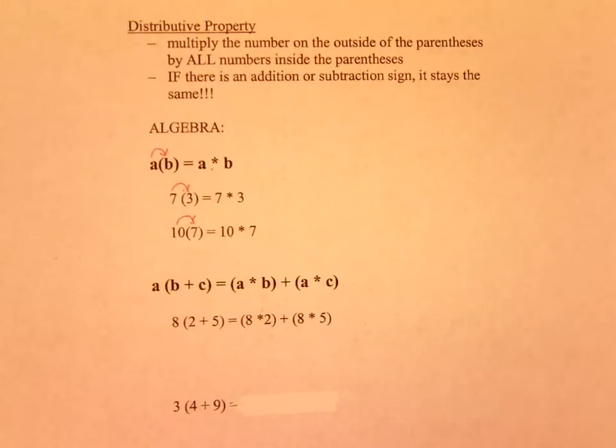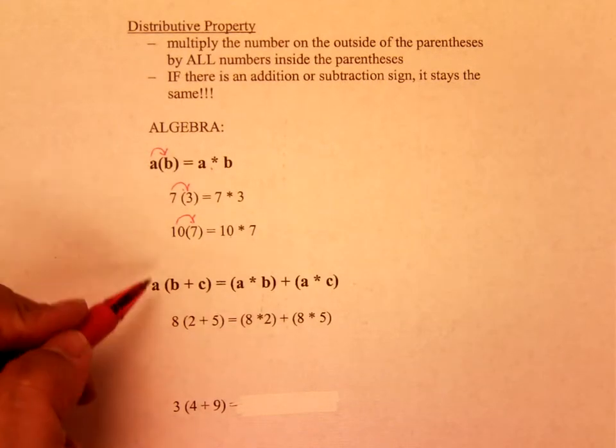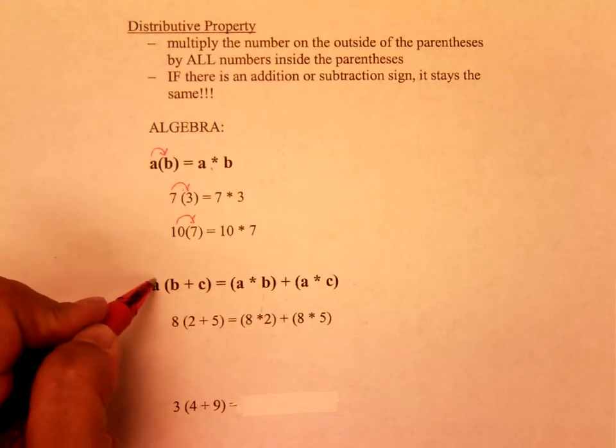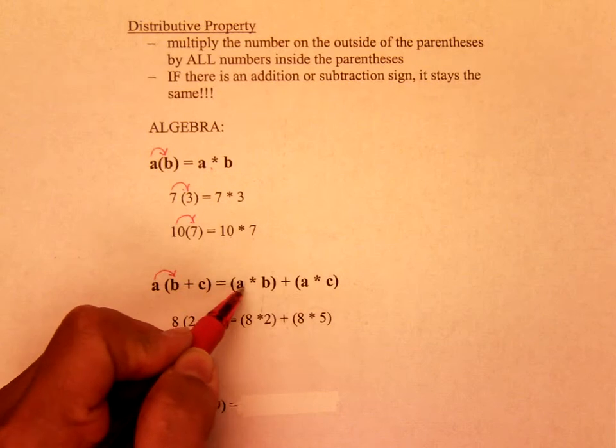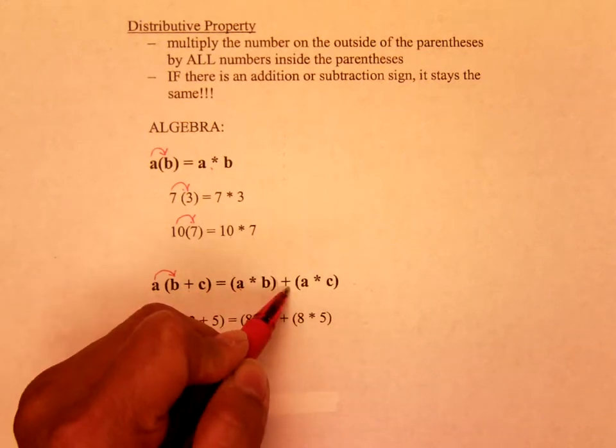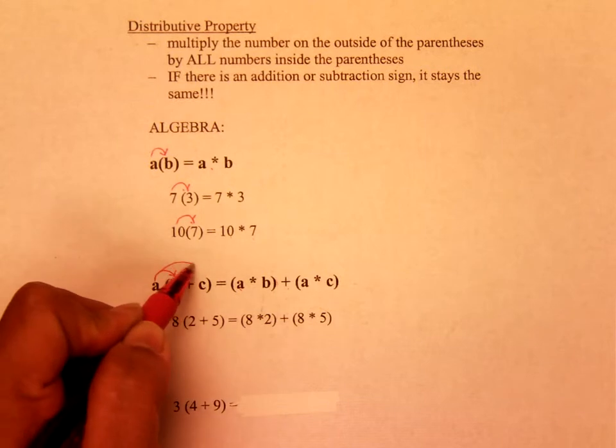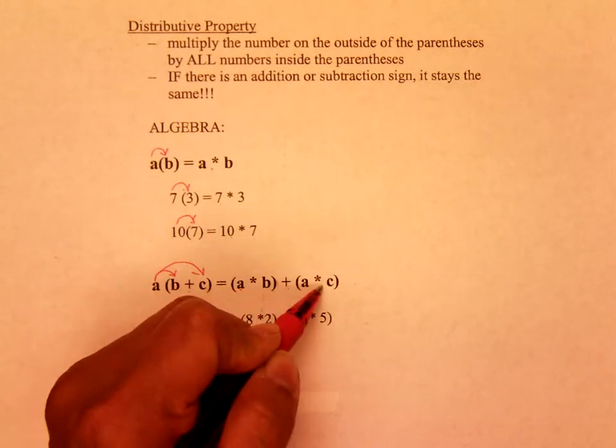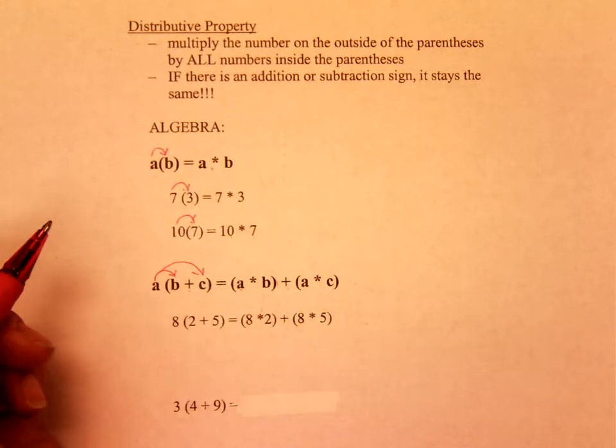Here is your Distributive Property. On the left-hand side, you have A times B, so you write it as this. A times B, put it in parentheses. Plus, there's your plus, and then you do A times C. A times C, you rewrite it.